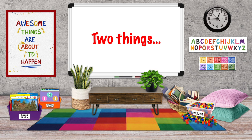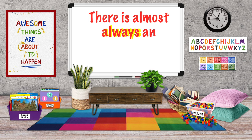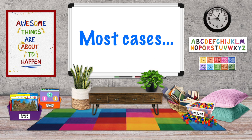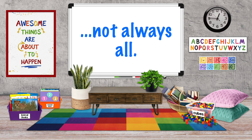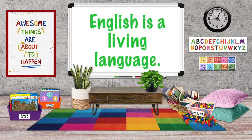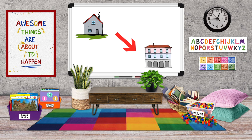Now two things before we get into an overview of the eight parts of speech. First, probably the most basic rule in English grammar is there is almost always an exception to every rule. That means that grammar rules apply in most cases, but not always. Second, English is a living language. Rules and what is acceptable do change over time, or may be different from location to location.